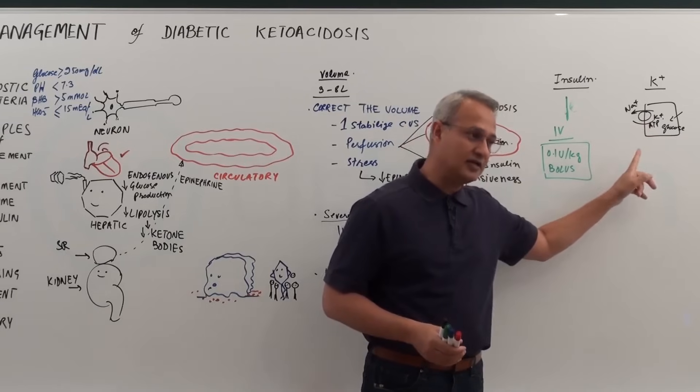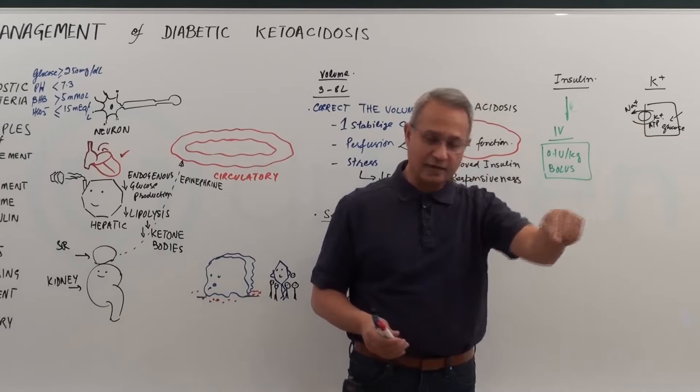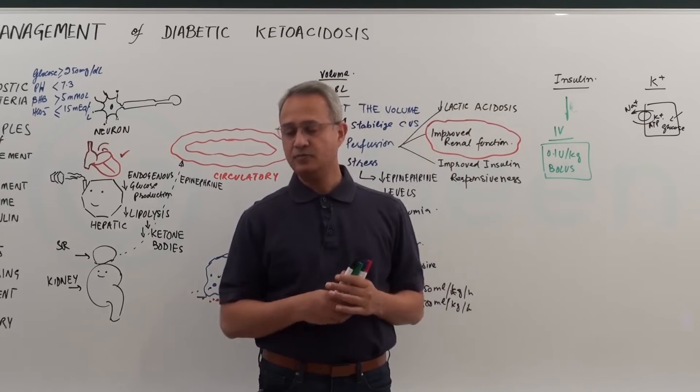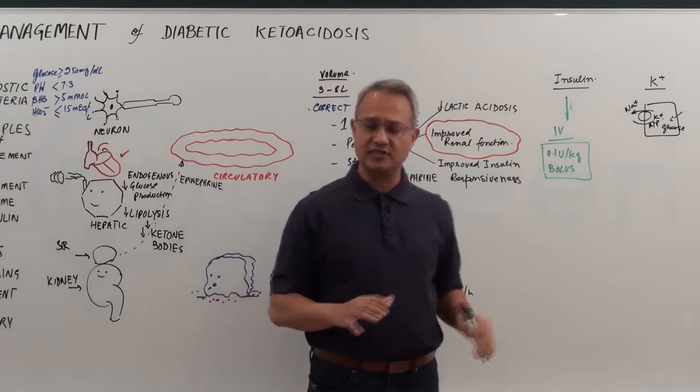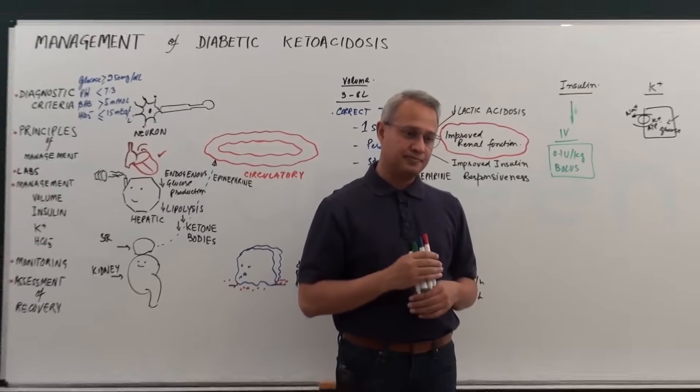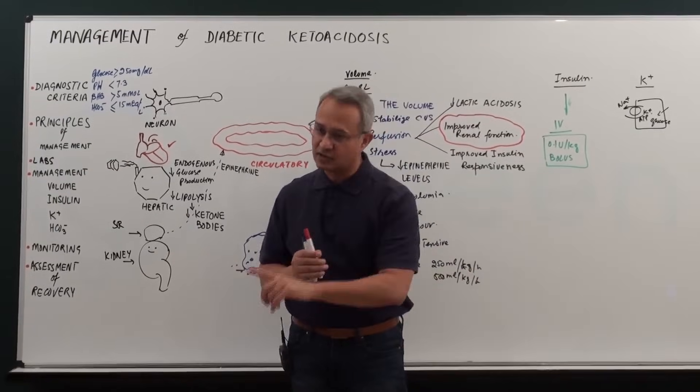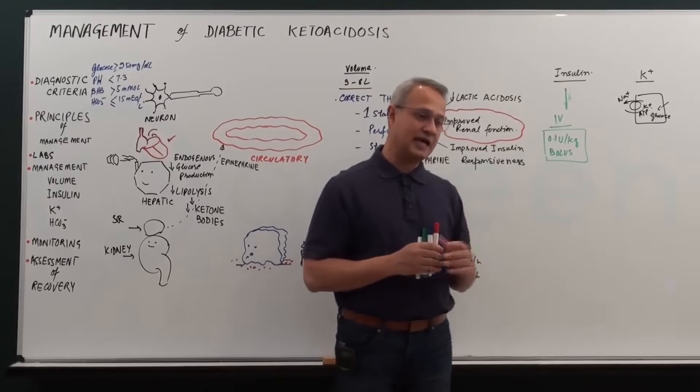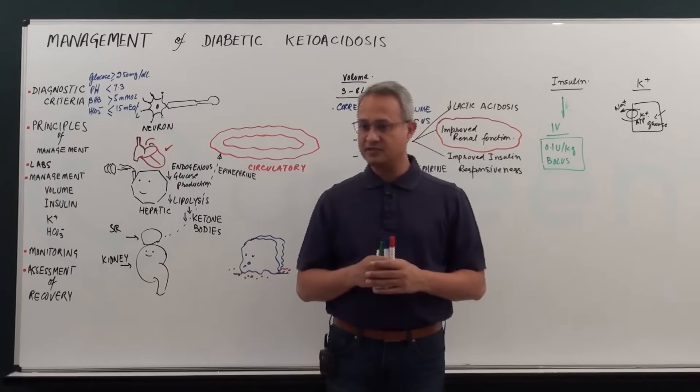When you give insulin, insulin is going to reduce potassium levels. If the patient is at risk of hypokalemia, then that can happen and that can cause cardiac arrhythmias.